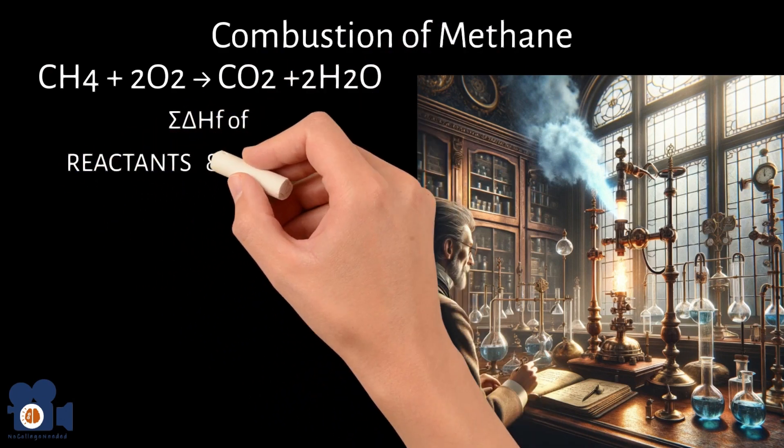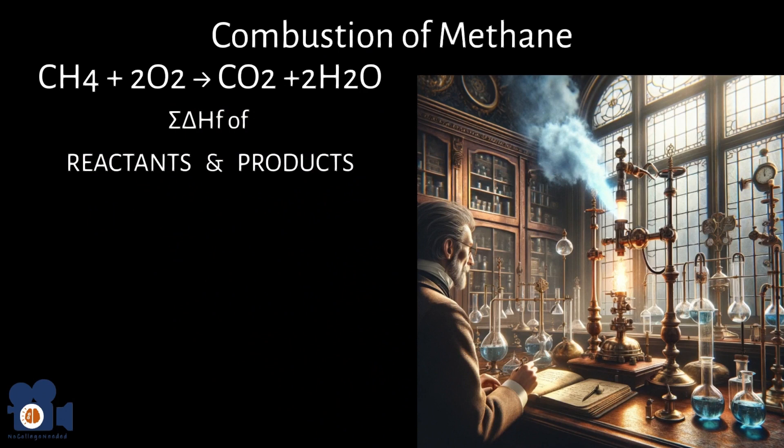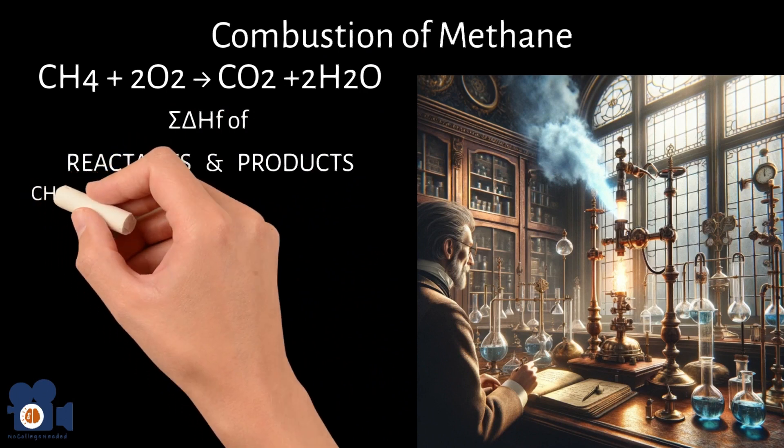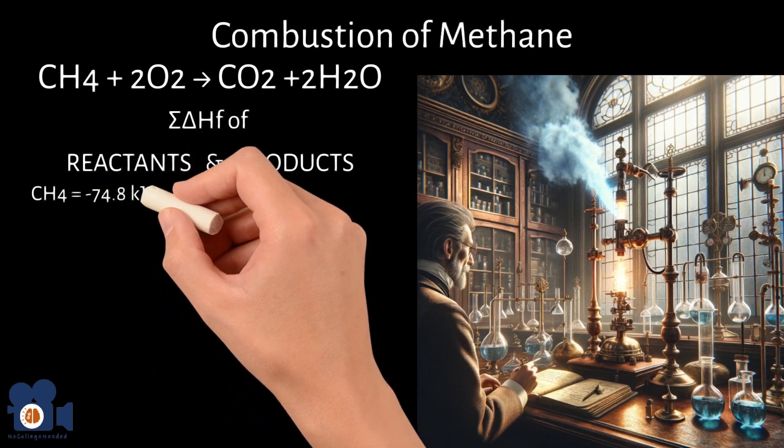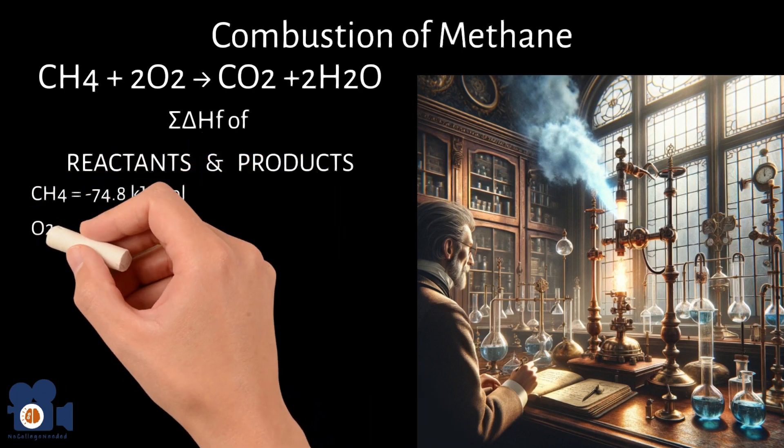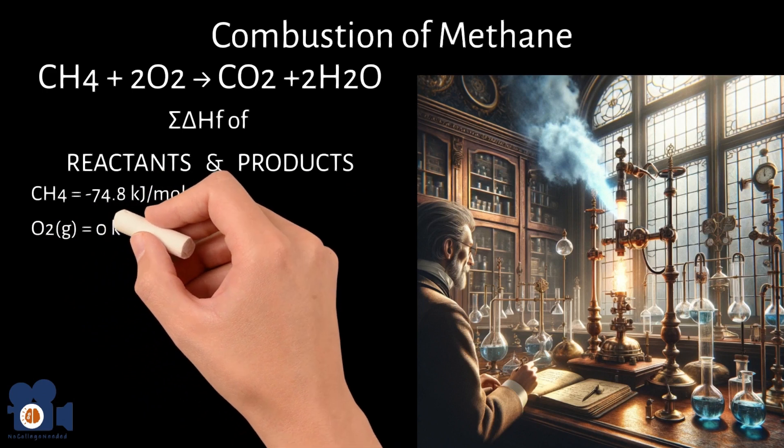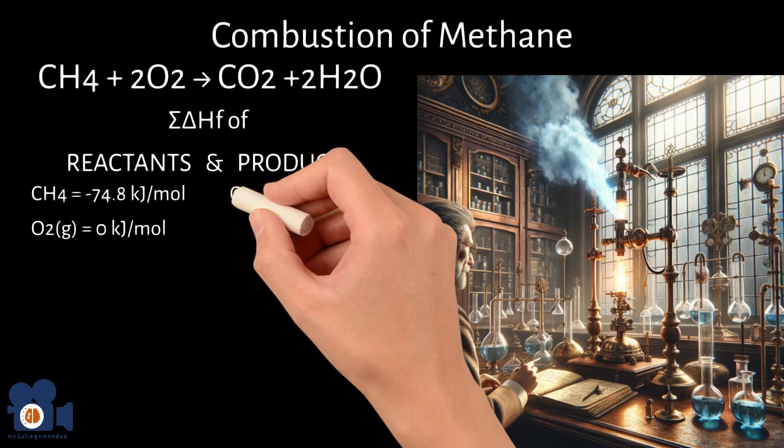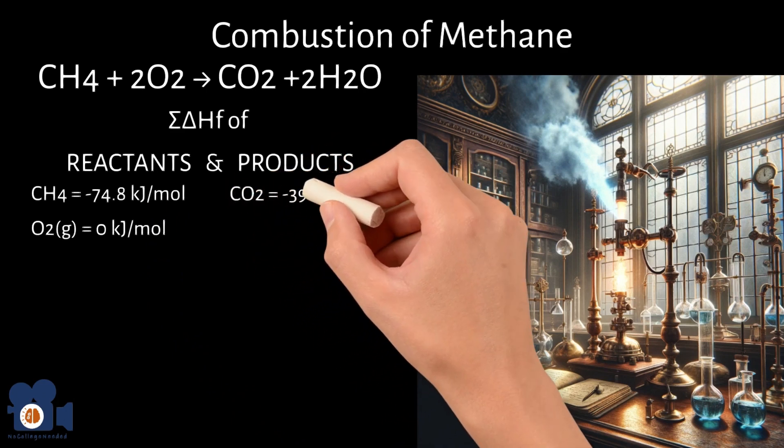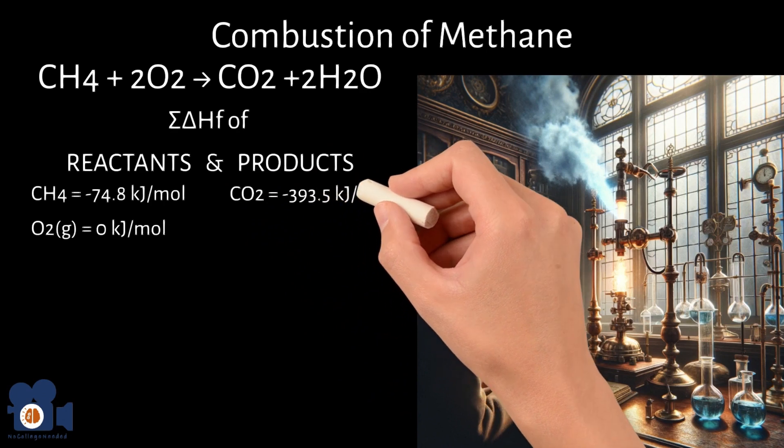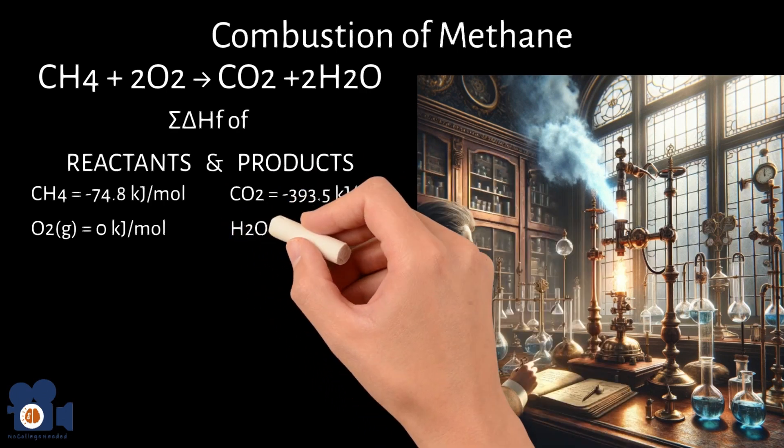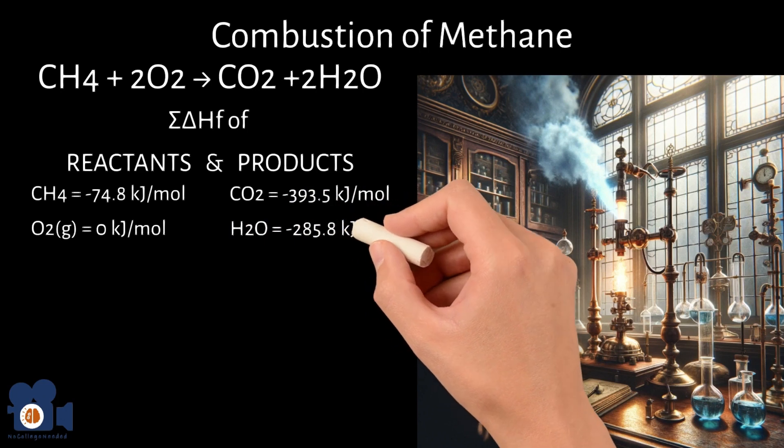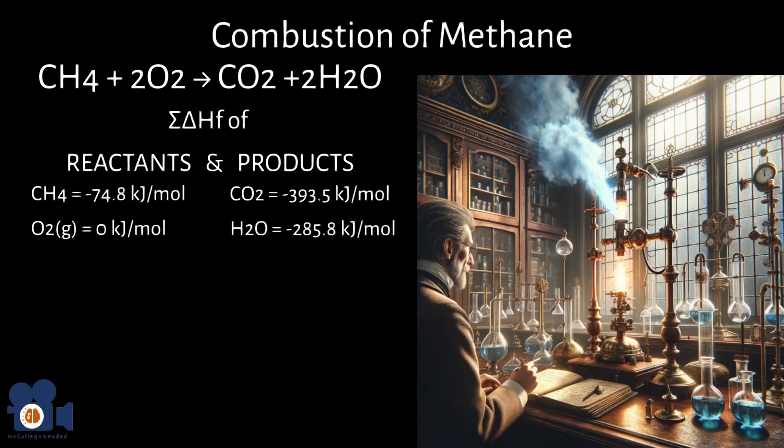Now we need to sum the delta HF of the reactants and products. Since we have the tabulated data, we know that the delta HF of CH4 methane equals negative 74.8 kilojoules per mole. Delta HF of oxygen equals zero kilojoules per mole since oxygen gas is in its standard state, therefore zero. Delta HF of CO2 gas equals negative 393.5 kilojoules per mole. And delta HF of H2O is negative 285.8 kilojoules per mole.